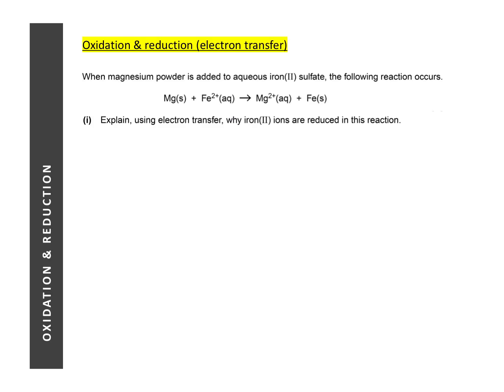This question is related to the definition of oxidation and reduction — there are four of them as mentioned. They want you to explain in terms of electron transfer why iron(II) ions are reduced. In one of the definitions, reduction is where electrons are added to a substance. So you must explain that iron(II) ions have gained electrons from magnesium to become iron atoms.